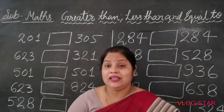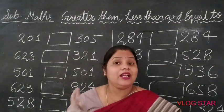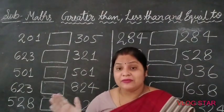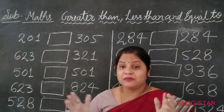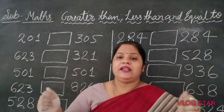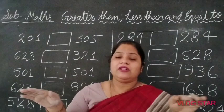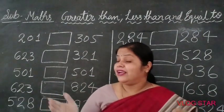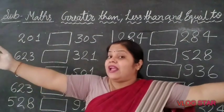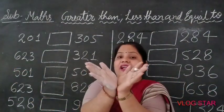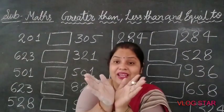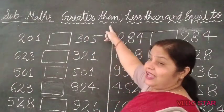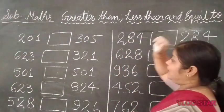When we have greater than, less than, and equal with one-digit numbers, we have three-digit numbers. Greater than, less than, and equal.